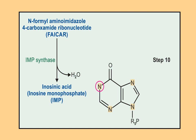Step ten: from formylaminoimidazole carboxamide ribonucleotide, FAICAR, finally inosinic acid or inosine monophosphate, IMP, is formed in the presence of IMP synthetase. The ring closure is complete, and all carbon and nitrogen atoms are now in place around the ribose-5-phosphate. The starting material IMP for further purine synthesis is ready after 10 steps.